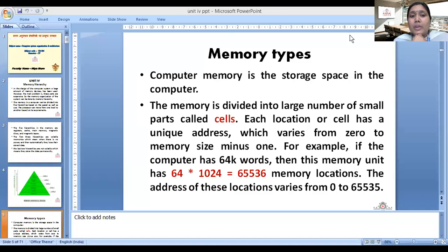Now let's talk about memory types. So what is our computer memory? Storage space in the computer. Computers divide our memory in equal parts. What are our equal parts? Cells. So if each location or cell has a unique address which varies from 0 to memory size minus 1. How many cells in our memory are? 64 cells. Where do we start from?